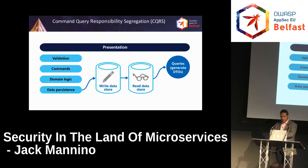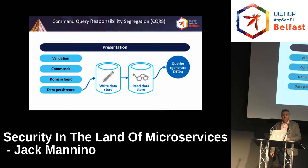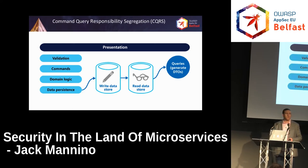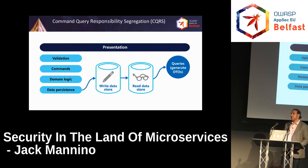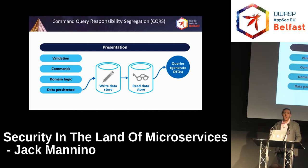CQRS allows you to separate your read and write interfaces. You have a presentation layer, commands, domain logic, a write data store, and a read data store. Some calls can read, some can write. In a complex microservice world, it's nice to have that level of granularity — you have more control rather than just assuming everything that hits a service has read or write access. It architecturally separates those concerns a bit further.